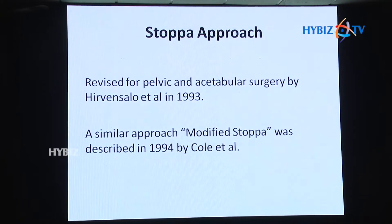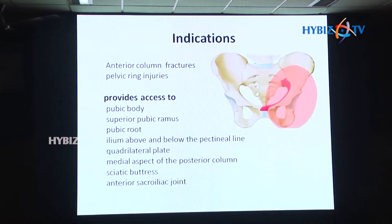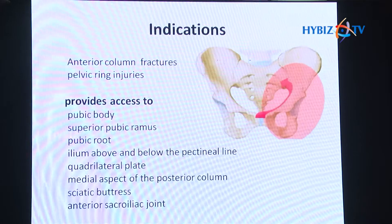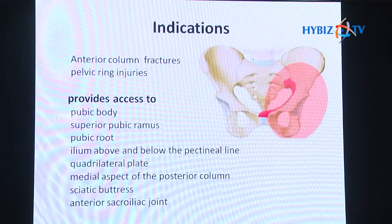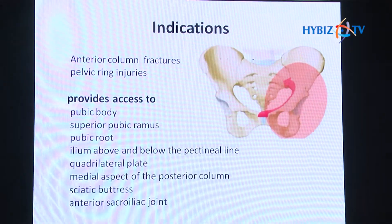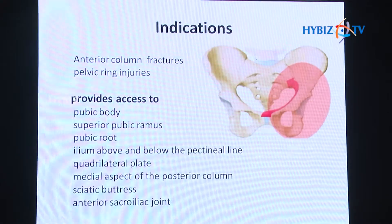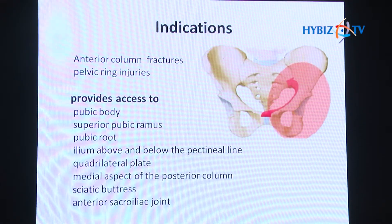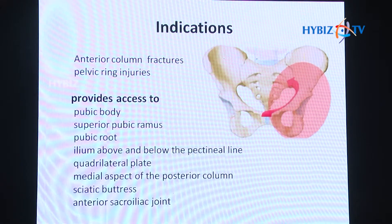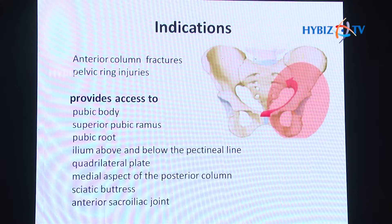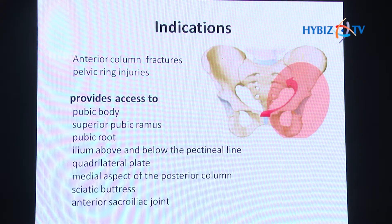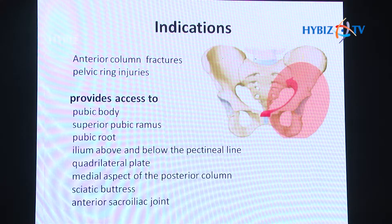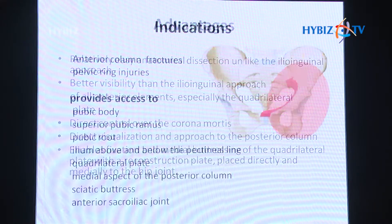Regarding indications — we have seen many fracture patterns including anterior column fractures and pelvic ring injuries. This approach provides beautiful access to the pubic body, superior pubic ramus, pubic root, ilium above and below the pectineal line, quadrilateral plate, medial aspect of the posterior column, sciatic buttress, and the anterior sacroiliac joint.